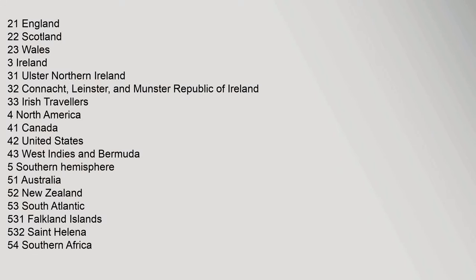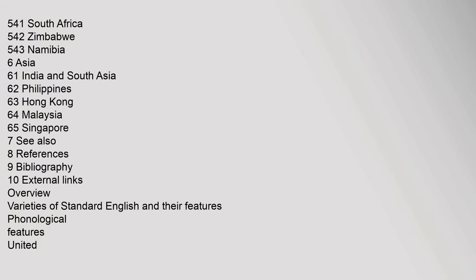The major regional groupings covered include England, Scotland, Wales, Ireland (Ulster/Northern Ireland, Connacht, Leinster, Munster, and Irish Travellers), North America (Canada, United States, West Indies and Bermuda), the Southern Hemisphere (Australia, New Zealand, South Atlantic including Falkland Islands and St. Helena, and Southern Africa including South Africa, Zimbabwe, and Namibia), and Asia (India and South Asia, Philippines, Hong Kong, Malaysia, and Singapore).